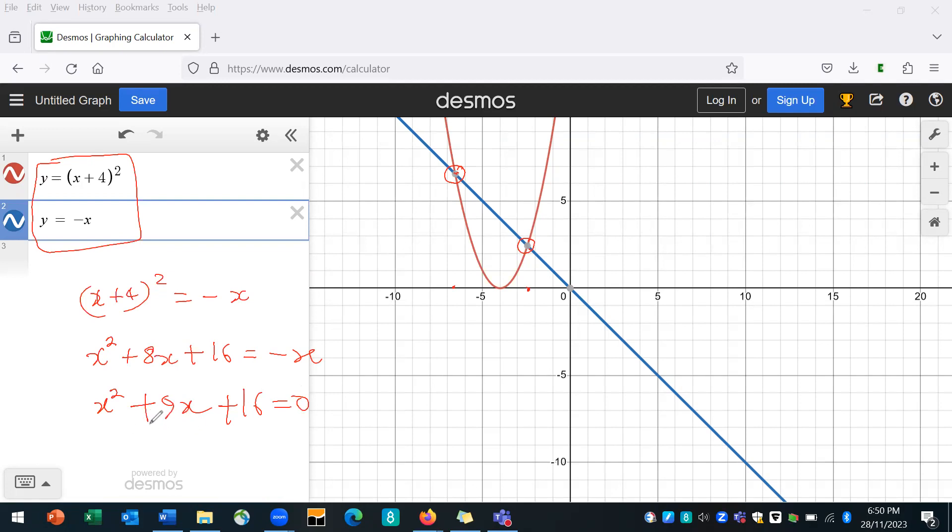So if you solve this using your calculator quadratically, or if you use the quadratic formula x equals minus b plus or minus square root of b squared minus 4ac over 2a, if you use that formula, then you should be able to get these values.